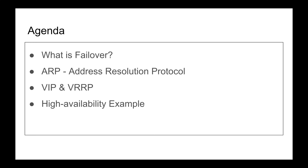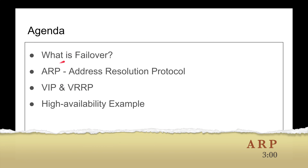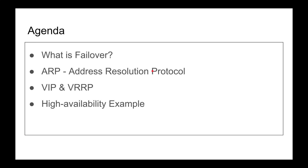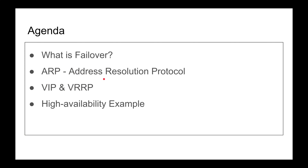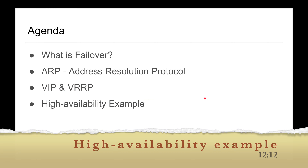I'm going to talk about ARP — address resolution protocol — and then a very important concept for failover which is the virtual IP address, also known as VIP. We're also going to talk about the virtual routing redundancy protocol, VRRP, which most of the time goes hand in hand with VIP. A virtual IP is not really a real IP; it's just a virtual one that a machine advertises.